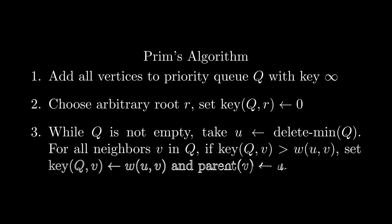We can slightly improve on the performance of Kruskal's algorithm using Prim's algorithm. The basic premise is that rather than starting with n trees and combining them, we only keep track of one tree and progressively expand it with each iteration. In particular, we start by storing all the vertices of the graph in a priority queue Q with key infinity. We then choose an arbitrary root r to start building the tree, updating key[Q, r] to be zero.